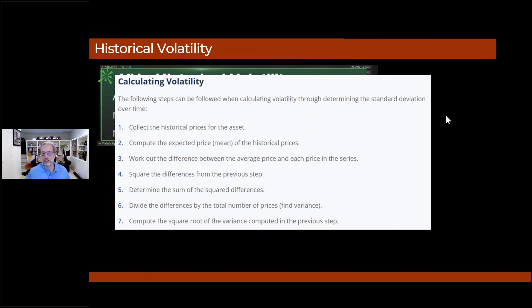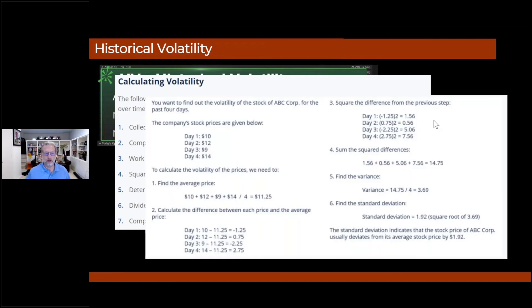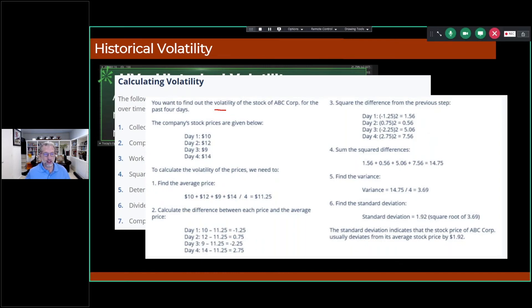Here's an example. I'm going to run through this super quick. Just I won't do the calculations, they do them for us. But let's just take a look at this. Let's figure out the historical volatility of ABC Corp over the last four days. What do we need? What are the closing stock prices for the last four days? Piece of cake. Let's take them, let's add them up, let's divide by four, let's get an average. Let's calculate the difference between each price and the average price. So there's the first day, 10 minus the average, minus 1.25, so forth and so on. So now we have the differences between the prices and the averages.